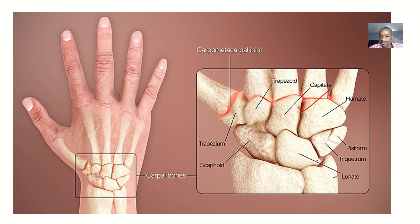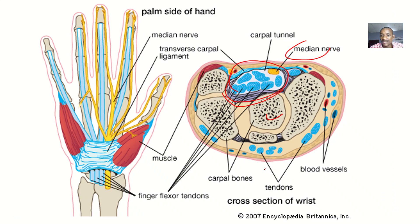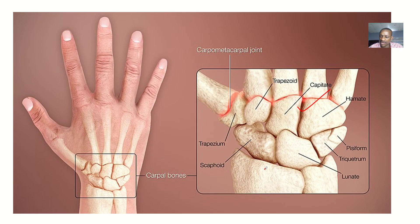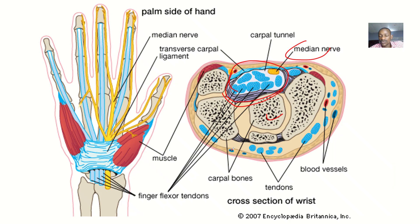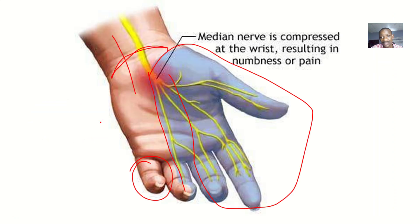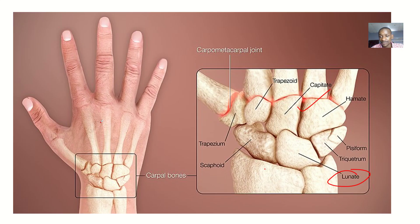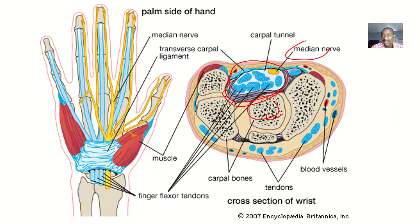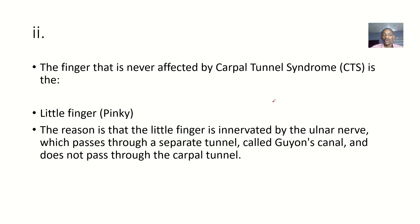Actually, that's not the capitate — the capitate is too far away. Correcting that: looking at the wrist right here, the correct answer is the lunate. You can reason this logically — you are talking about this area of the wrist, so the bone closest to you is the one right here, and that is the lunate.